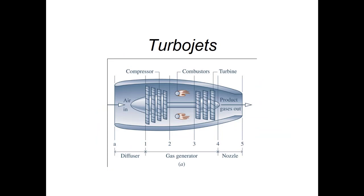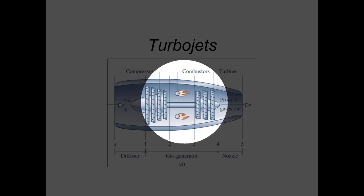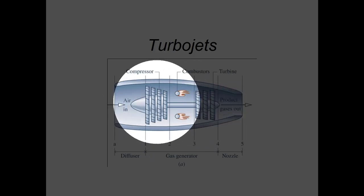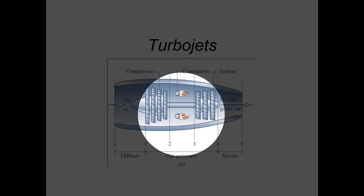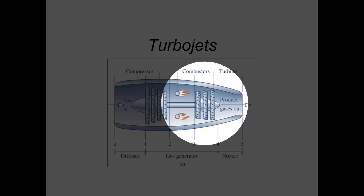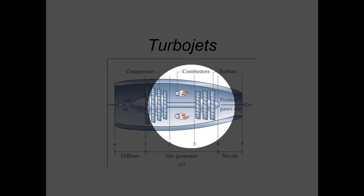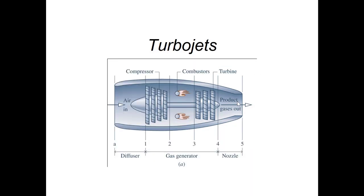That's a high-level review of the Brayton cycle, which is directly relevant to our next topic: turbojets. The cool thing about a turbojet engine is that its center is a Brayton cycle — you've got a turbine mechanically connected to a compressor with combustion happening in between. But there are two components we don't have in a basic Brayton cycle: at the air inlet we have a diffuser, and at the air outlet we have a nozzle.